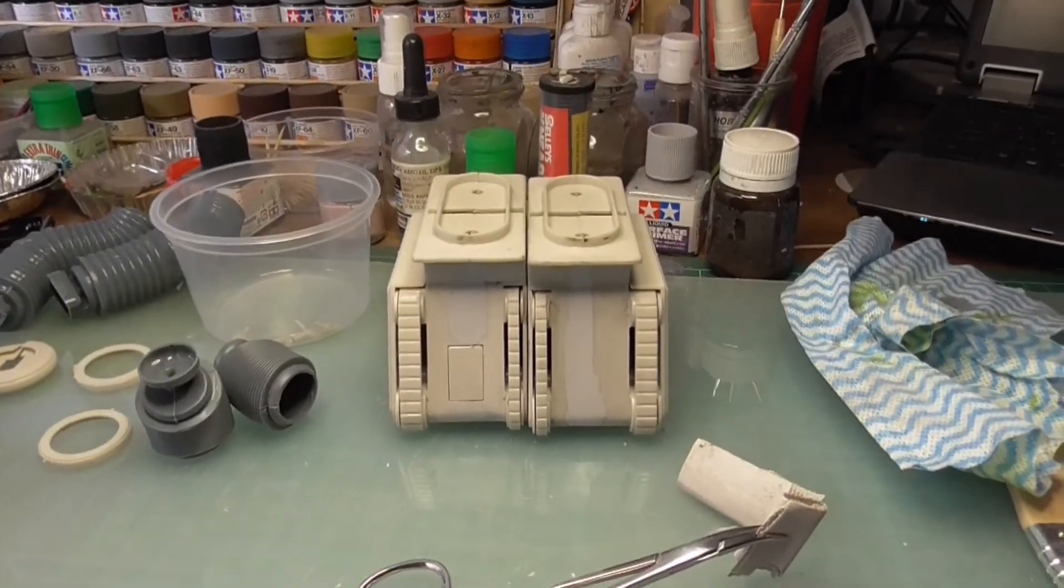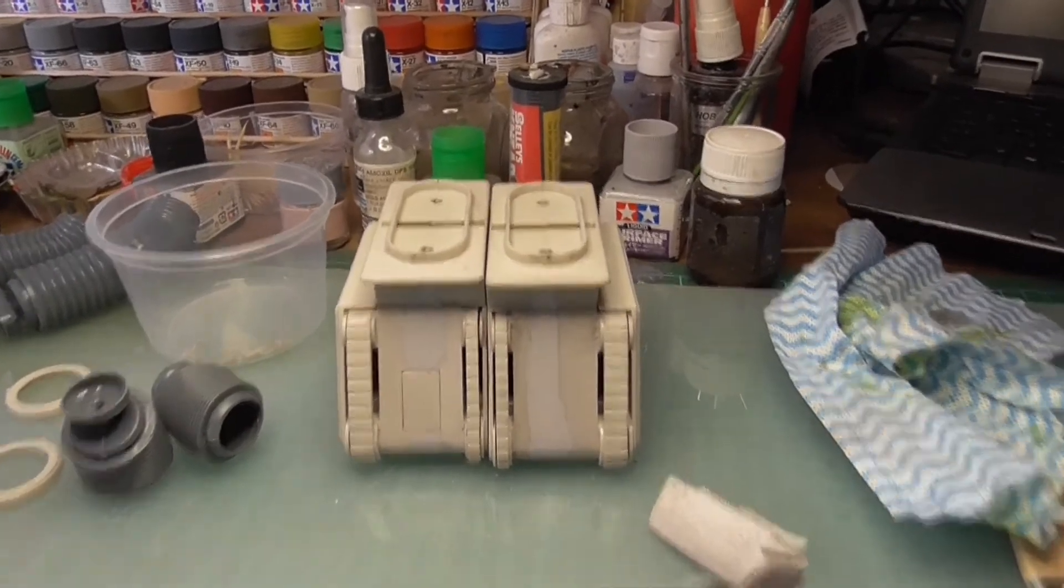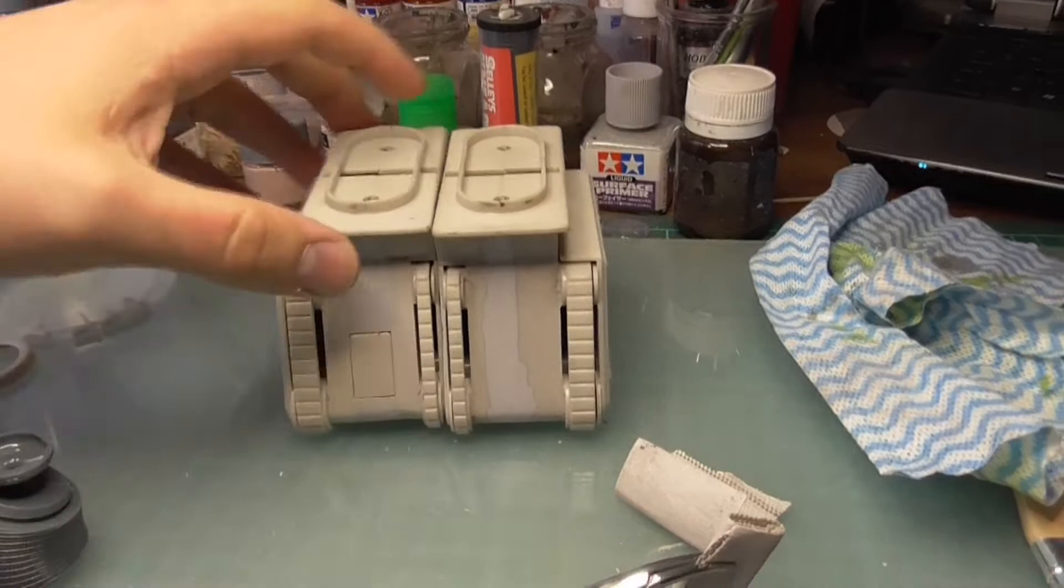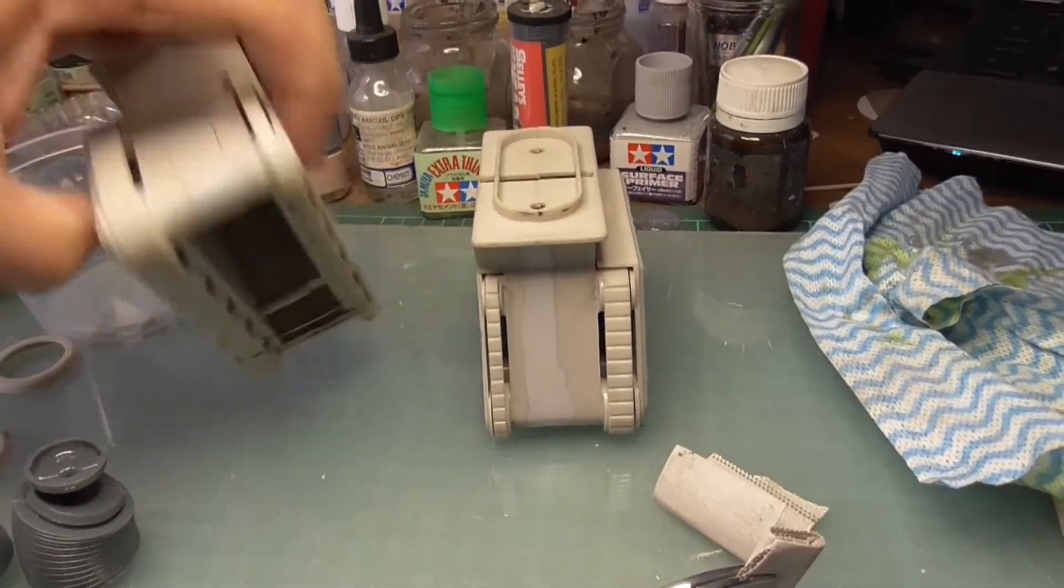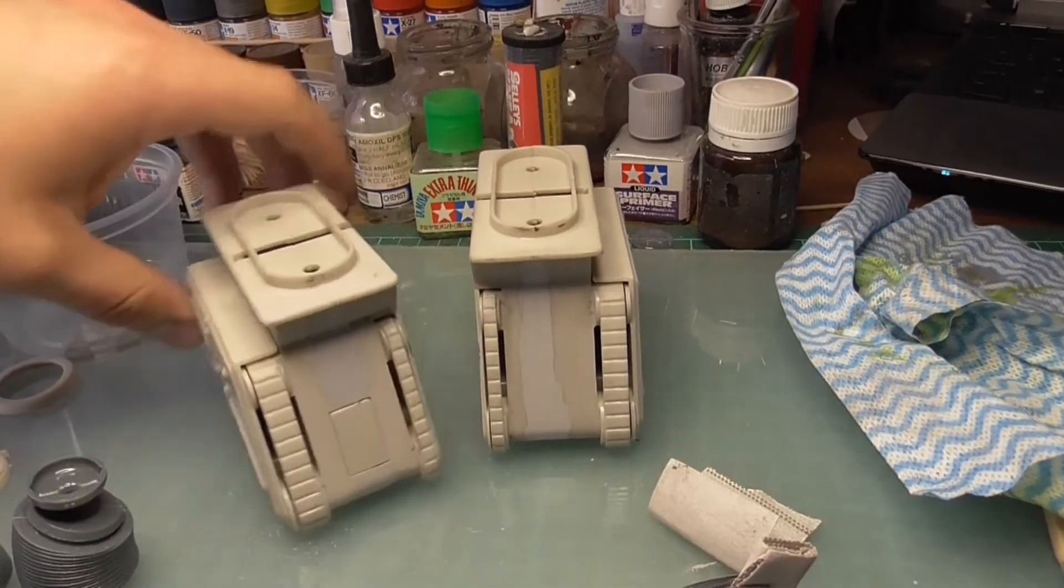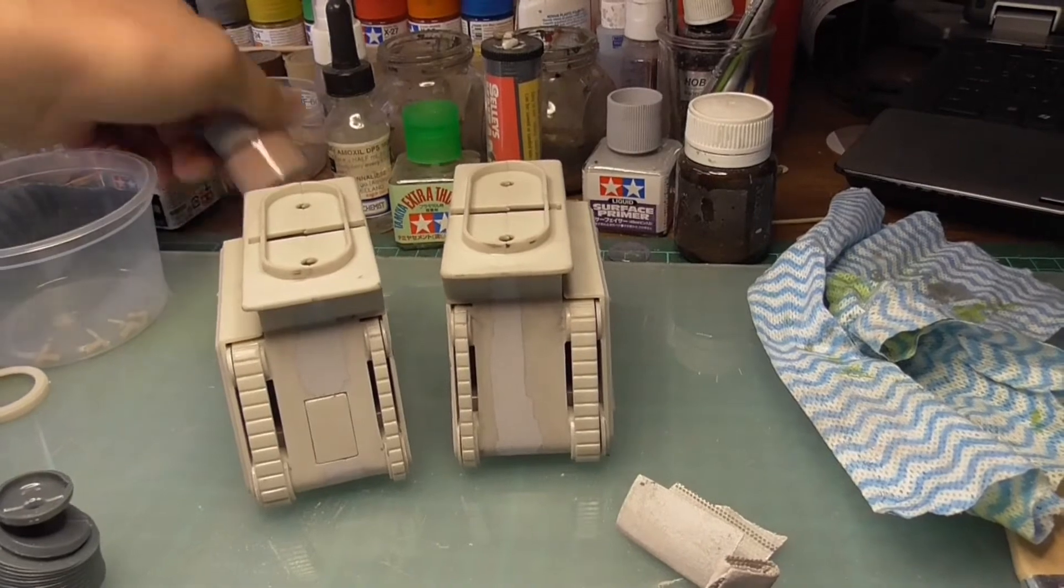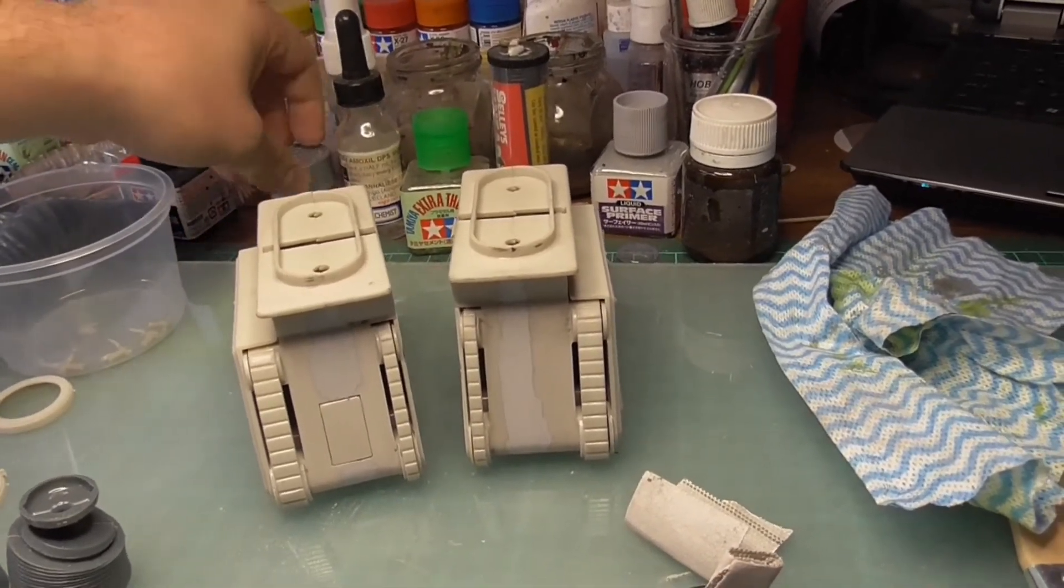Alright guys, day two on the B9 robot. I spent most of the day today just sanding the seams here because I did apply a fairly heavy amount of filler. Which incidentally, the filler I used, I'll just put it in this bottle. But it's just an automotive spot filler, similar to what you guys use, the Bondo. It's just that.